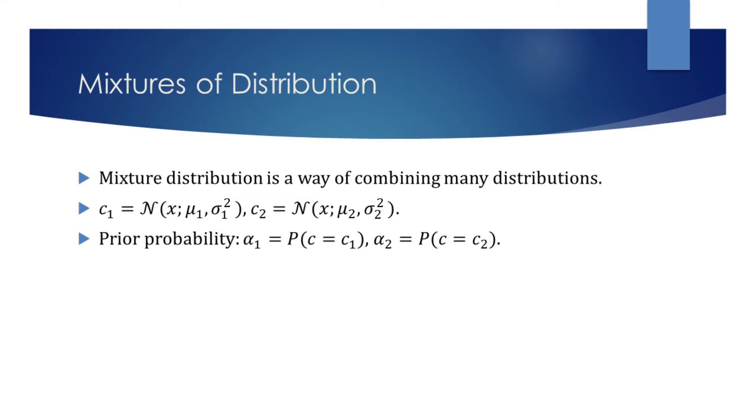Given that a sample has already been generated, the probability for any component to have generated that sample is called the posterior probability.